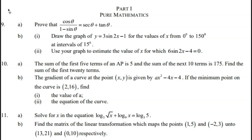Part B: The gradient of a curve at a point xy is given by ax squared minus 4x minus 4. If the minimum point on the curve is (2, -16), find i, the value of a, and ii,